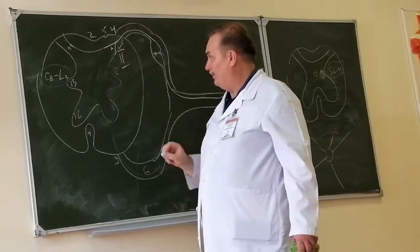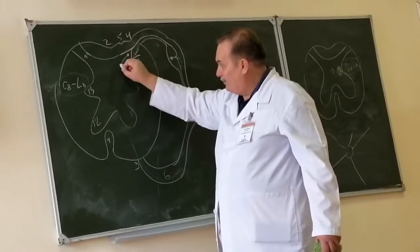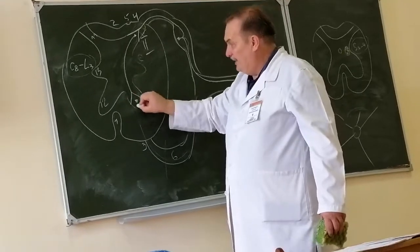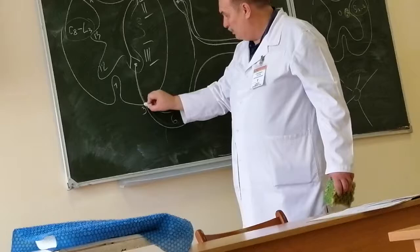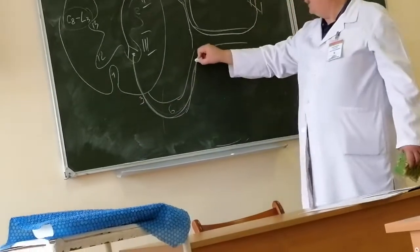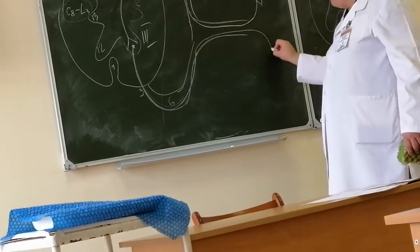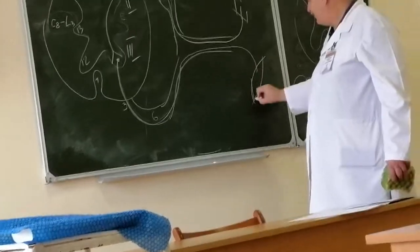That is the second neuron. Axon of this second neuron goes to anterior horn and finishes in motor neuron. Axon of motor neuron passes through anterior root, spinal nerve and goes to skeletal muscles.